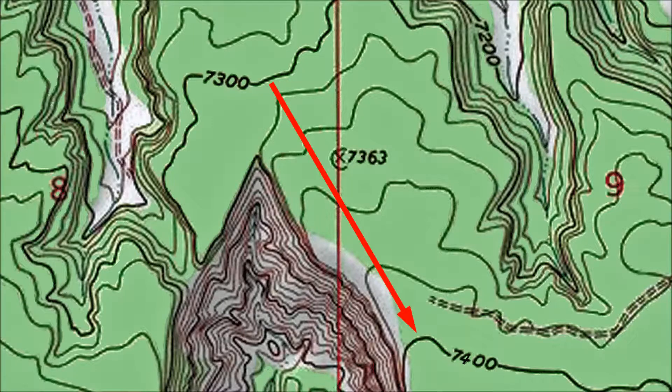Perhaps you're using map segments without a stated contour interval because you photocopied or printed out part of the map. Or maybe you're looking at a contour map on an electronic device. In such cases you can calculate the contour interval using the index contour lines.